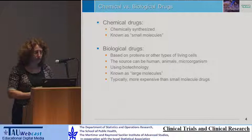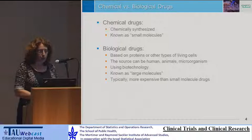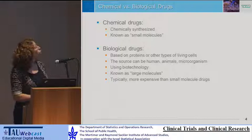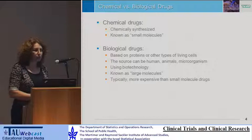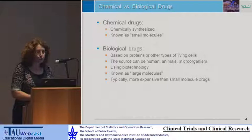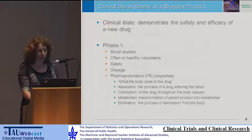I will start with the introduction, and the first distinction I want to make is between chemical and biological drugs. Chemical drugs are chemically synthesized and known as small molecules, whereas biological drugs are based on proteins or other types of living cells. We use biotechnology to manufacture them, and they are known as large molecules. Typically, they are more expensive drugs because of their manufacturing process.